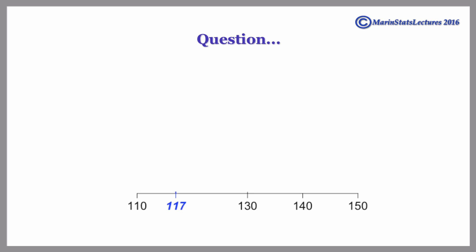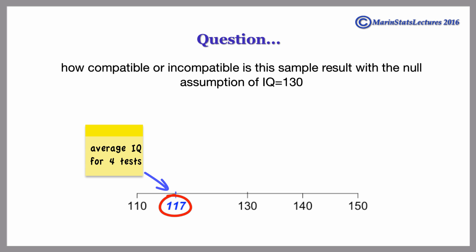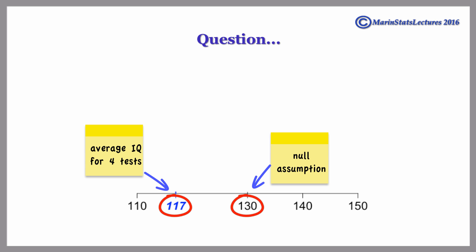Let's consider an average IQ score of 117 over the four IQ tests. How compatible or incompatible is this sample result with the null assumption that his IQ is 130? Over the four tests, he averaged 13 below his assumed IQ. Is getting a score 13 below what we'd expect unreasonable? It's hard to say.